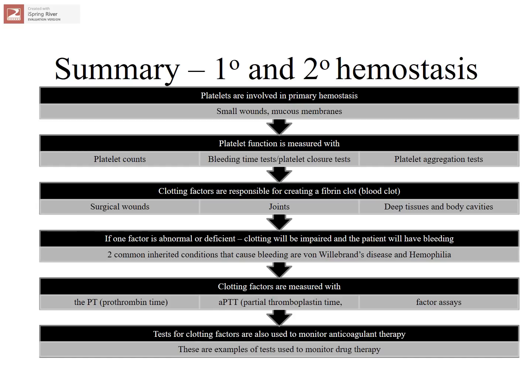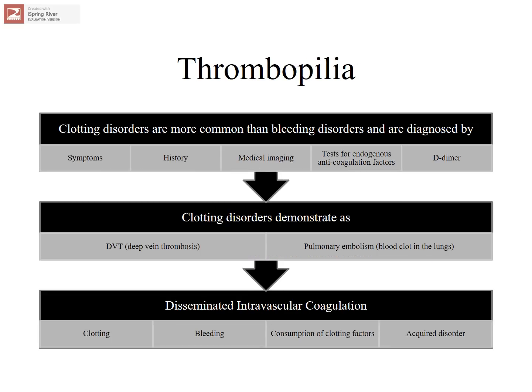Here is a summary of primary and secondary hemostasis — what is happening in these areas, what happens if there's a dysfunction, and the tests used to measure them. You should be aware of the four or five tests discussed, where they work, the kinds of disorders they measure, and the drug therapies they monitor. You should also understand thrombophilia — the tendency to form blood clots — and disseminated intravascular coagulation.